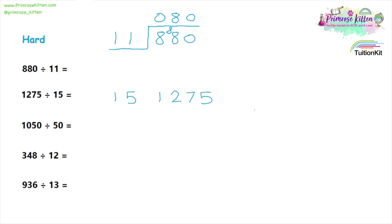1275 divided by fifteen. How many fifteens will go into one? That is zero — carry the one over. How many fifteens will go into twelve? Again, that is zero, so we carry the twelve over. Now how many fifteens will fit into one hundred and twenty-seven? Eight fifteens are a hundred and twenty, and then we have seven to carry over. Then: how many fifteens will go into seventy-five? Five.